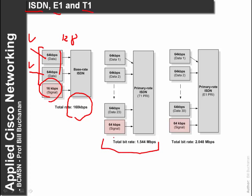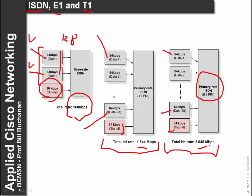In the US, the T1 PRI primary rate ISDN stream takes 24 of these 64 kilobits per second streams into a TDM stream, and then adds a 64 kilobits per second signalling stream to give 1.544 megabits per second. European systems are typically built around E1 PRI primary rate ISDN, which takes 30 of these streams and adds a 64 kilobits per second stream to give 2.048 megabits per second. This is the existing way that many telephone networks transmit their voice signals, and these are then multiplexed up until we get extremely high rates.